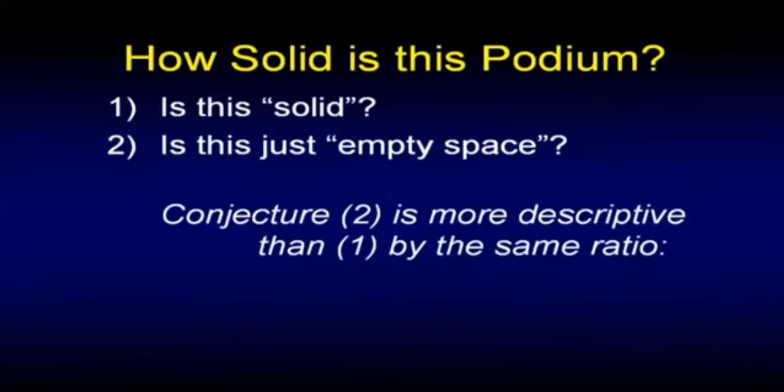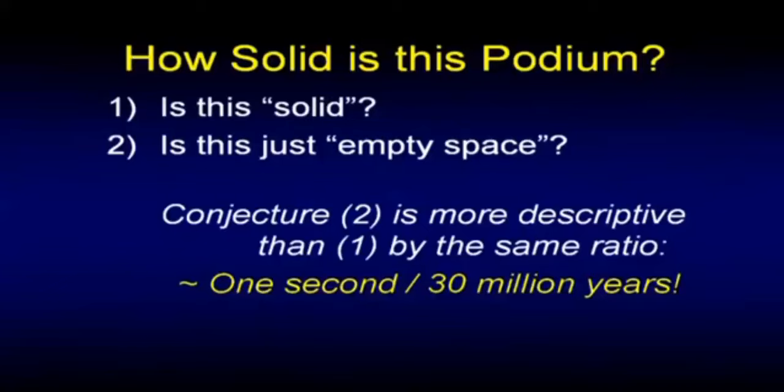The electrons are negative. It's the collision of those molecules that create the appearance of it being solid, but it's mostly empty. What do you mean mostly? Well, that ratio, one to 30 million, one second to 30 million years. It's astonishing. So is it empty space? Conjecture two is more descriptive than one by the same ratio. It's more empty space than solid. I want you to get a feeling for this illusion that we call solidity.